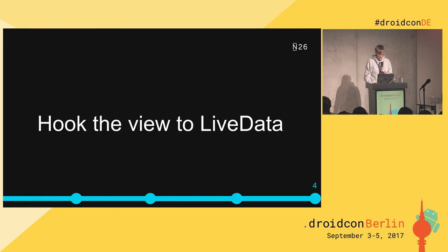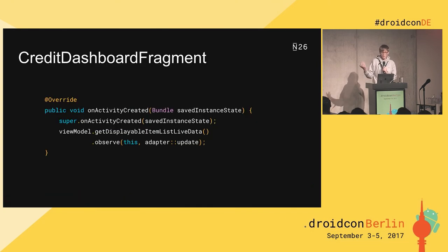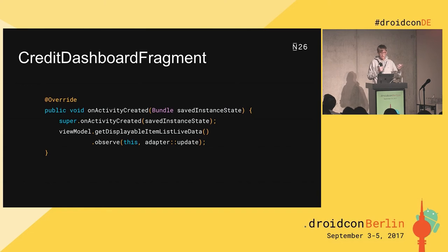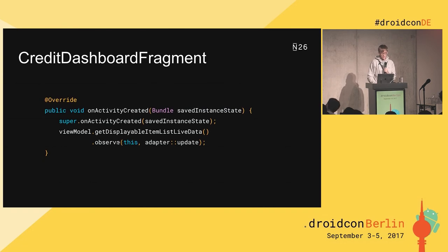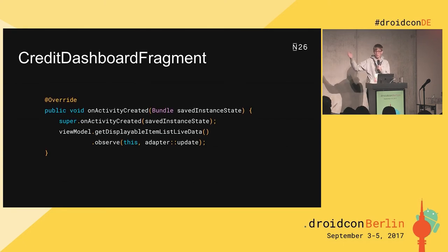Finally, we hook the view to the LiveData. In the CreditDashboardFragment, in onActivityCreated, we call viewModel.getDisplayableItemListLiveData, observe it, and update the adapter. Pretty simple. We are done with our feature — we've seen it from the store all the way up to the view.